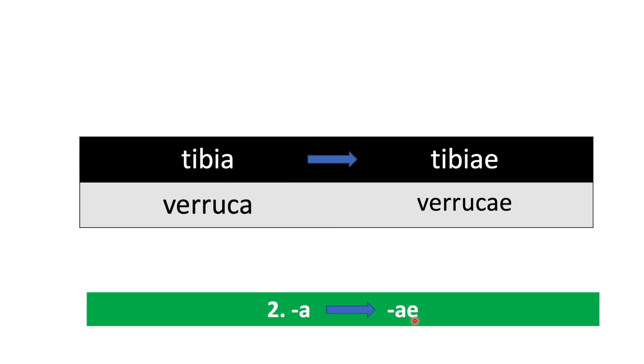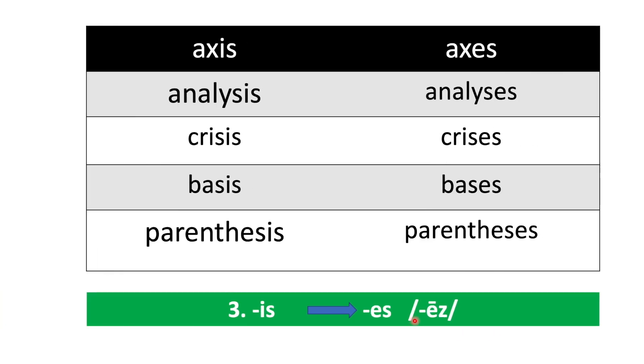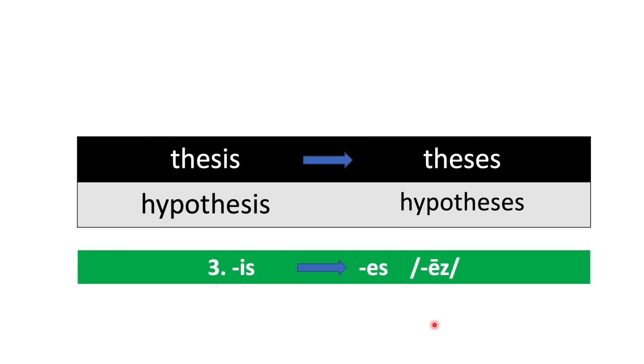Tibia/tibiae, verruca/verrucae. Third category: words ending with is, and then for the plural becomes es, but the sound is ease. Axis/axes, analysis/analyses, crisis/crises, basis/bases, parenthesis/parentheses, thesis/theses, hypothesis/hypotheses.